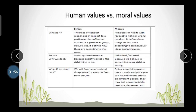What are the differences between human values and moral values? First, ethics means the rules of conduct recognized with respect to a particular class of human actions or a particular group's culture. It defines how things are according to the rules — whatever work you do, you build up your own rules on professional and personal ethics, making it a code of conduct. Morals are the principles or habits with respect to right or wrong conduct, defining how things should work according to your individual ideas and principles.